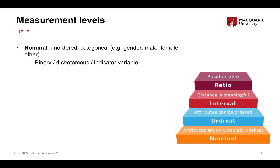A particular type of nominal variable is called a binary variable — a nominal variable with only two categories. For example, measuring whether somebody drives to uni or not, with answers yes or no, is a binary variable. This is also called a dichotomous variable or an indicator variable — all three terms refer to the same thing: a categorical variable with two possible categories. Yes or no, present or absent, one or two.